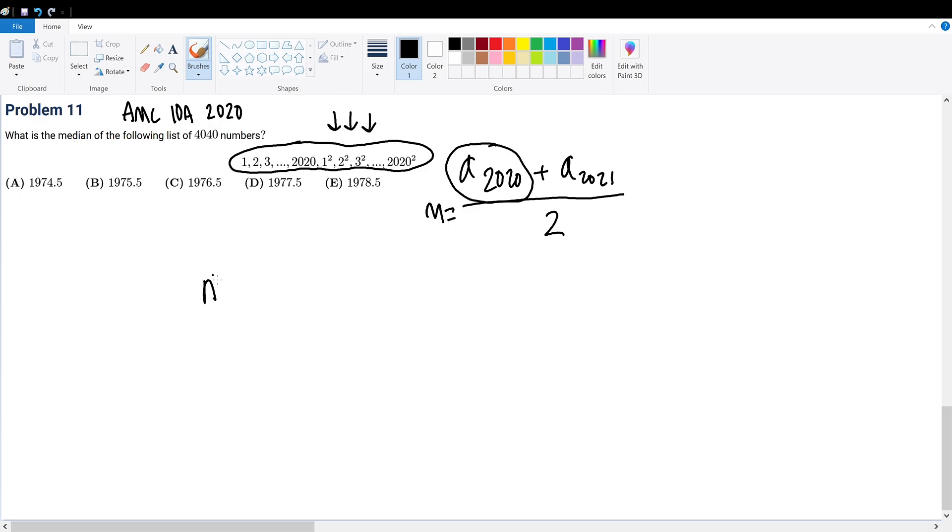So we want to think of a number squared that can get us close to 2020. And what number can that be? Well, from quick calculations and quick thinking, 45 squared is equal to 2025.